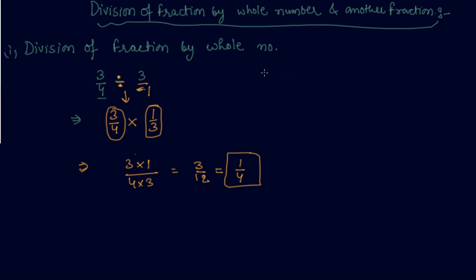Let me give you one more example. If I have to divide 7 by 8 by 7, I will write this as 7 by 8 divided by 7 by 1. If there is nothing in the numerator of the whole number, I can write 1 in the denominator.